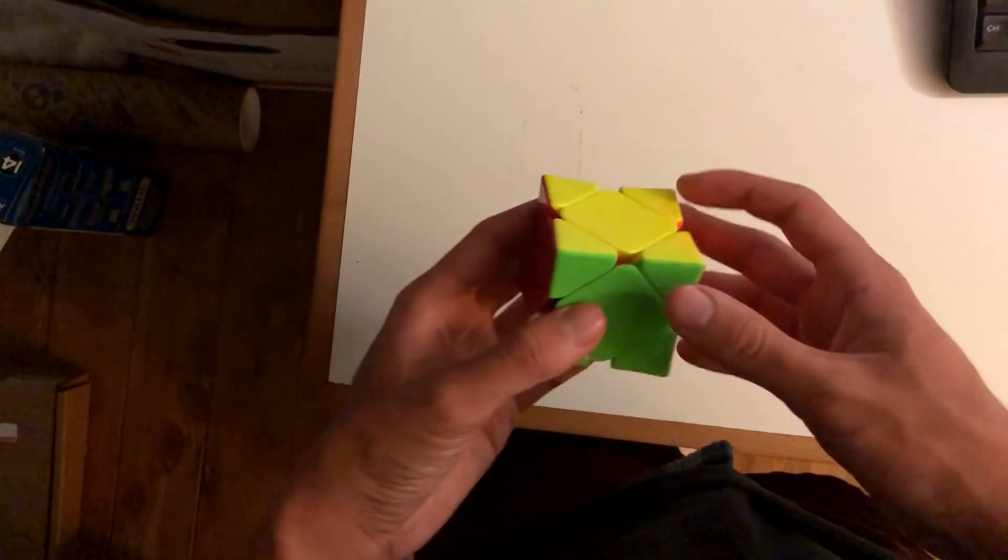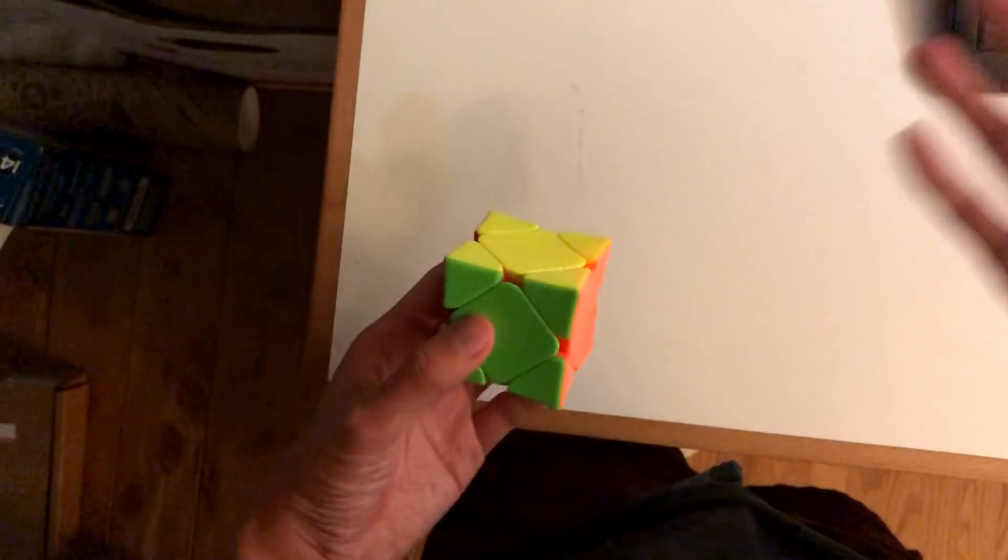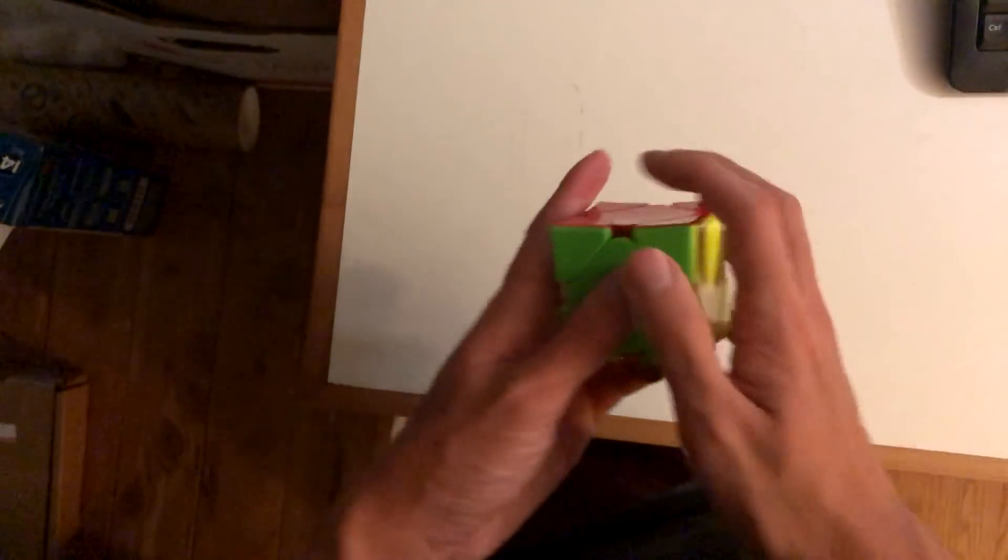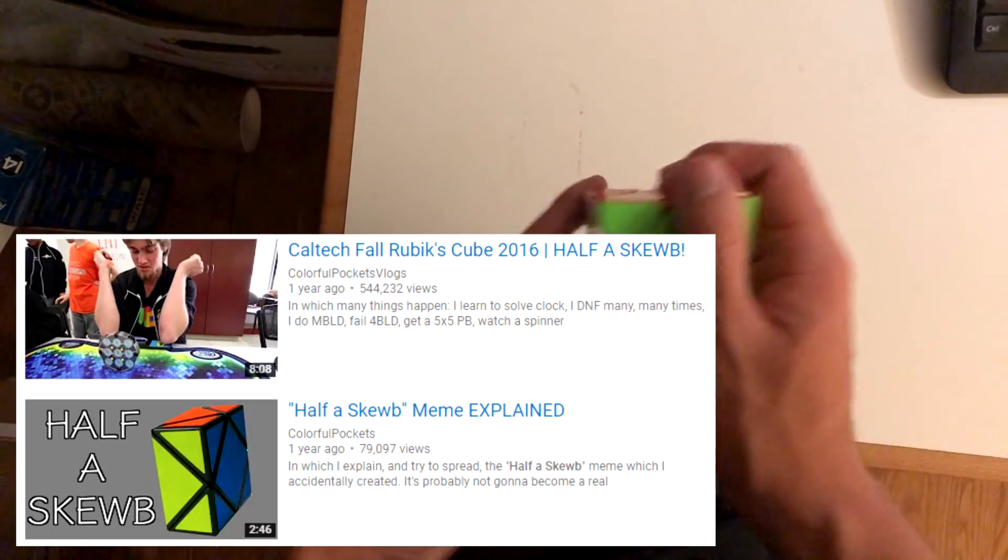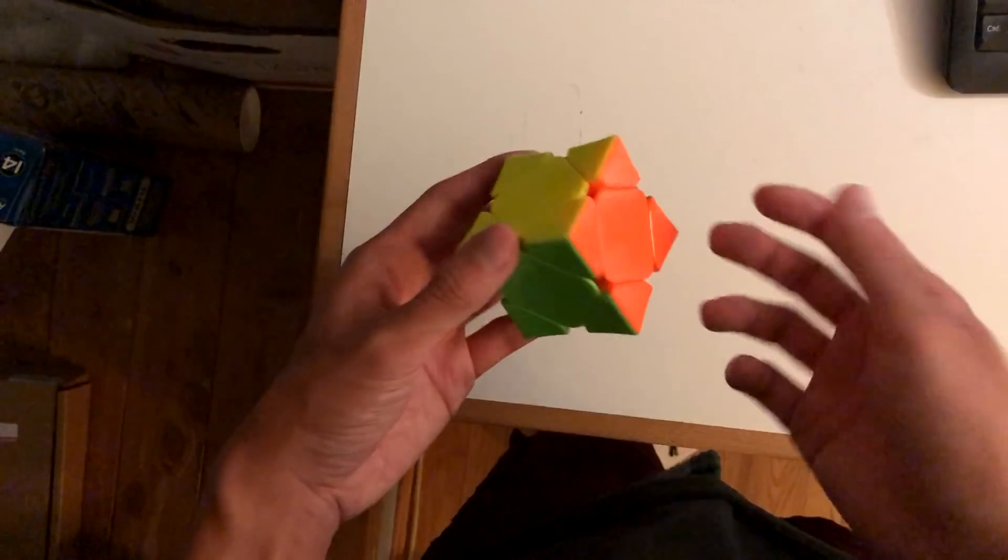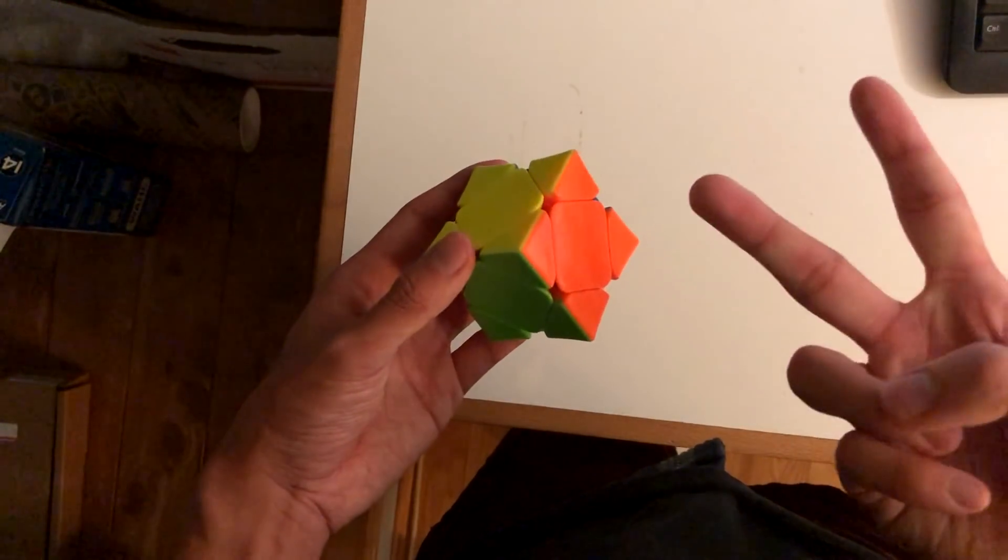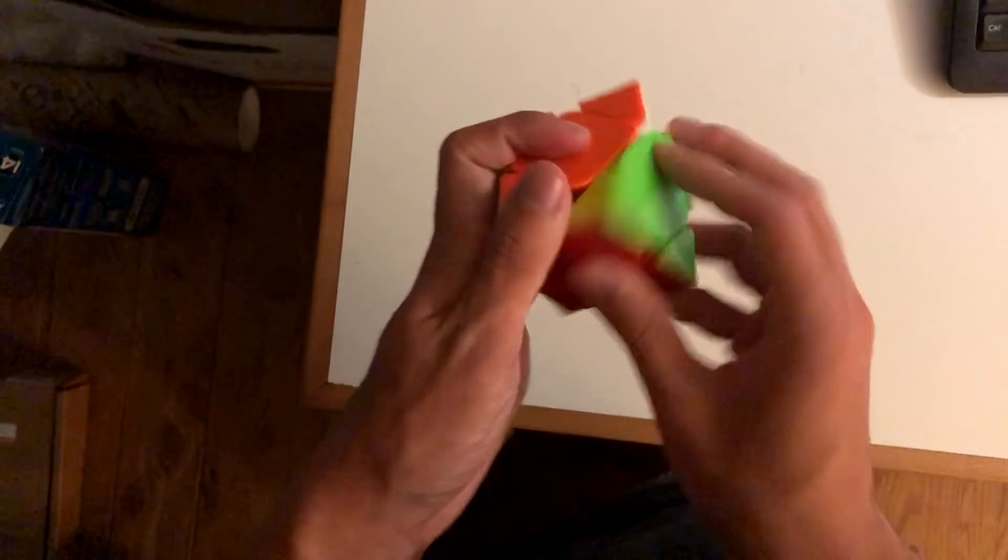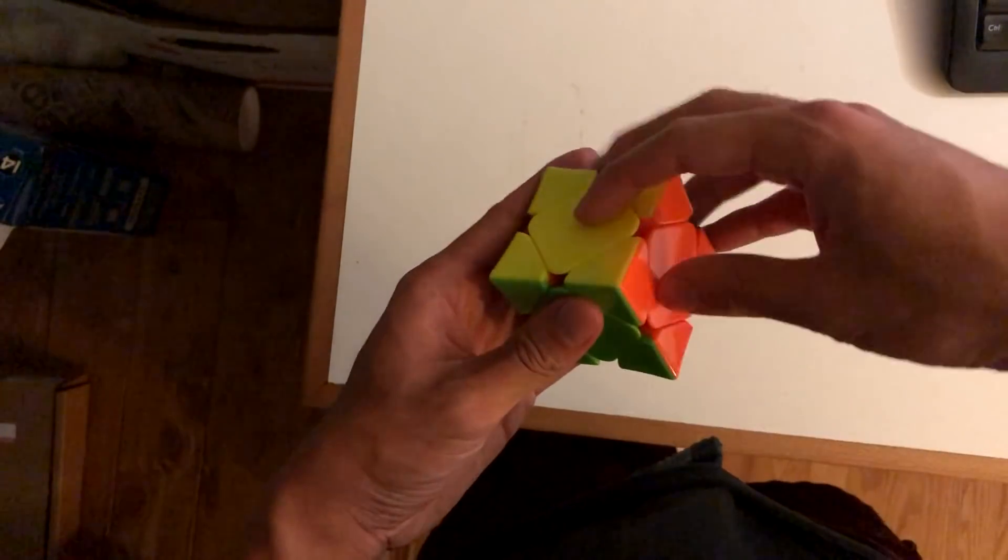What is my method? Well, do you know that meme that Colorful Pockets has been spreading about half a SCUBE? This is that meme in real life. And why is that? That's because my method has two steps. Step one is solve half of a SCUBE. Step two is solve the other half.